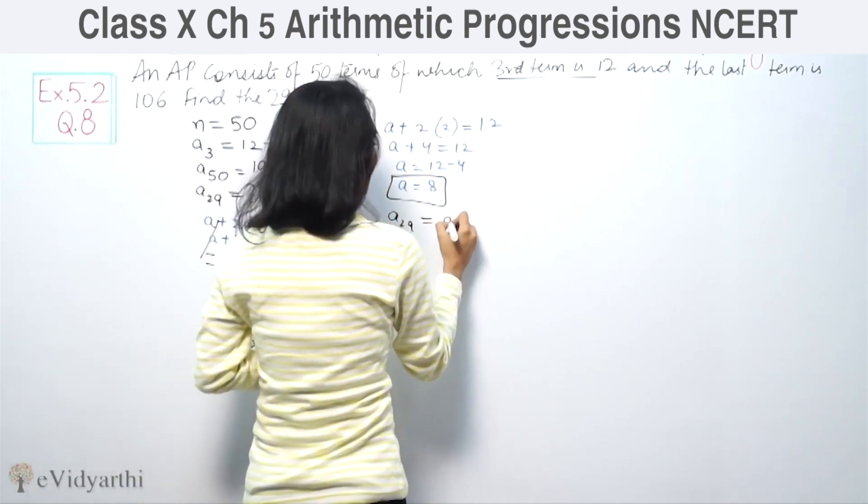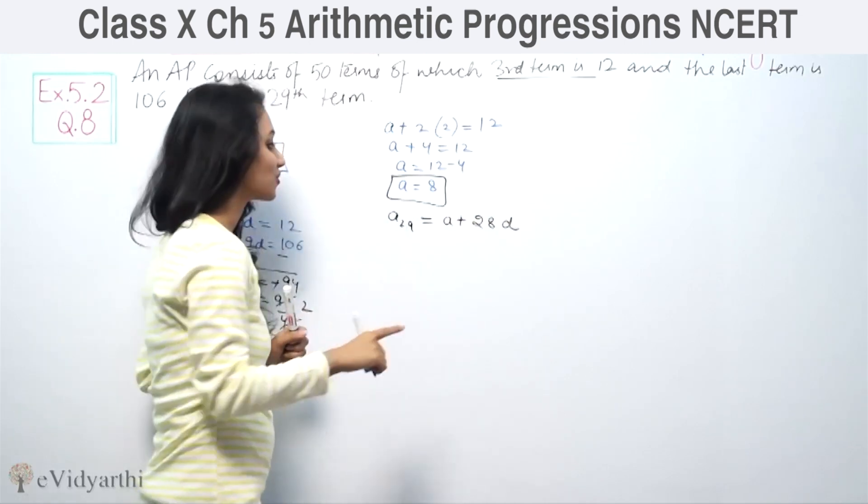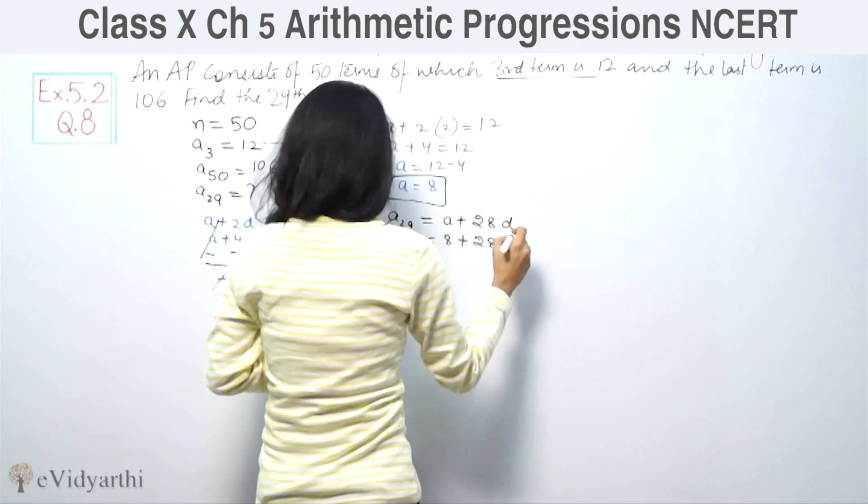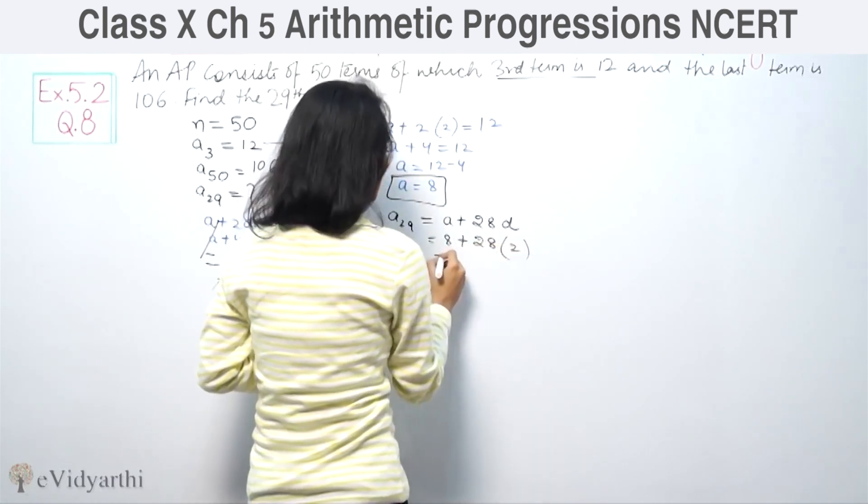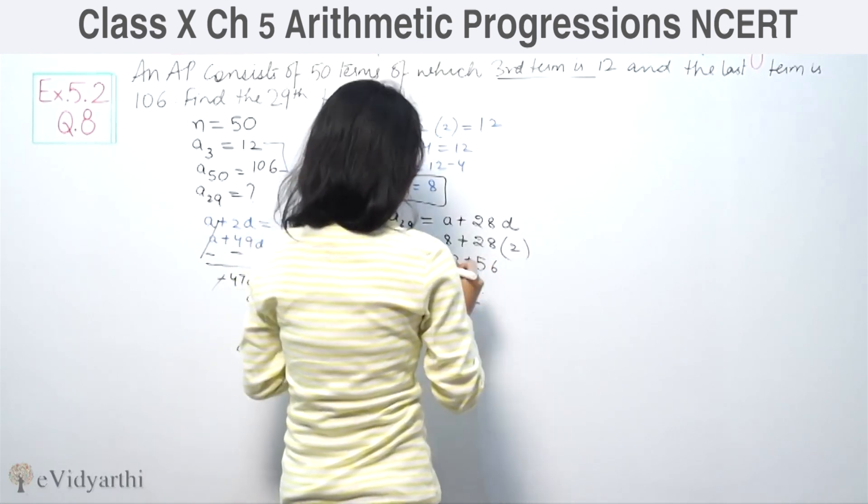A29 is A plus 28D. So first term is 8 plus 28, common difference is 2. So 8 plus 56 is equal to 64.